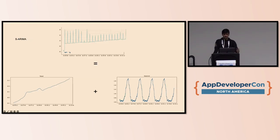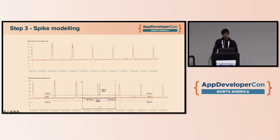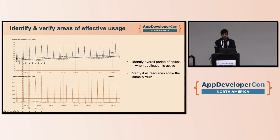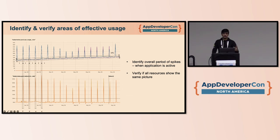Once we have this, it's all about the data. We used several models. One key step was to decompose time series data into its components using a model called Seasonal ARIMA — a common pattern to extract trends, seasonality, and noise. Then we did spike modeling to figure out if the spikes we see in the data are actually significant. With these two steps, you get a time bifurcation showing when an application is active or inactive. Doing this for all resources gives a collective overlap — for example, an application might first do reads, then processing, then writes, so network egress spikes appear earlier than CPU spikes.